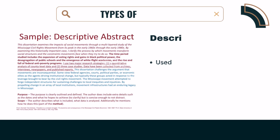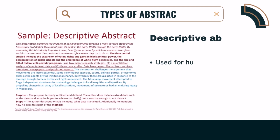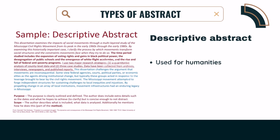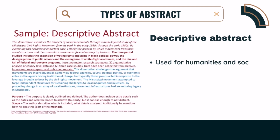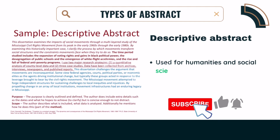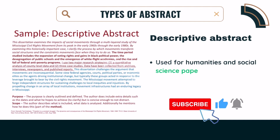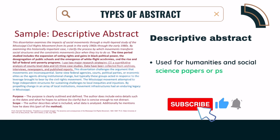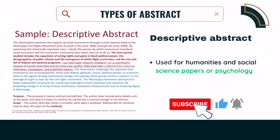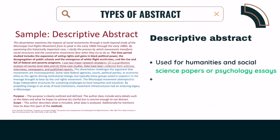There are two main types of abstract: one, descriptive, and two, informative. The type of abstract you write depends on your discipline area.